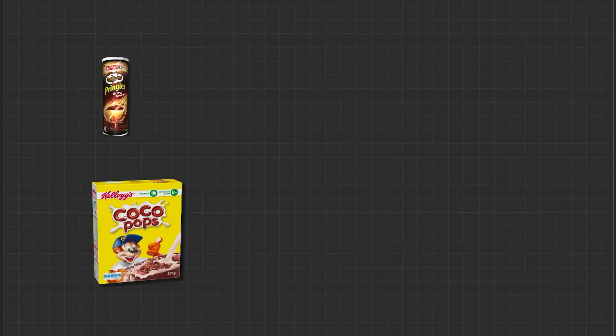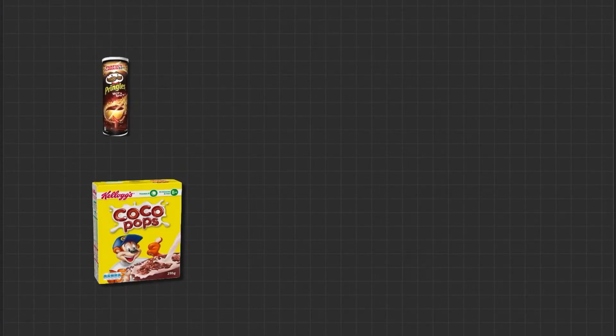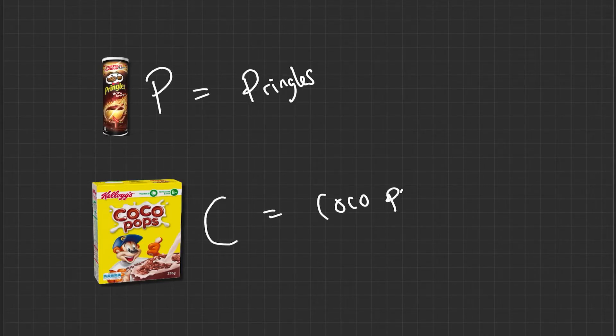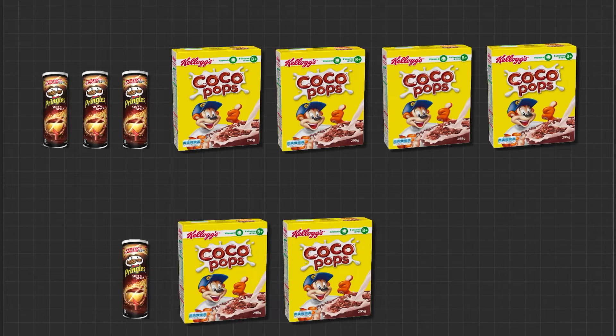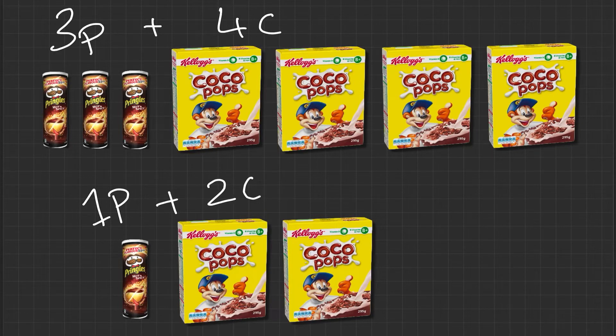Okay, I'm going to get started. So before we do anything, let's define our variables. We're just going to keep this simple and we're going to say P is for Pringles and C is going to be for the Coco Pops. So remember, you bought three packs of Pringles and four Coco Pops box. So we're going to call that 3P plus 4C. And earlier on, I bought one pack of Pringles, so one P and two boxes of Coco Pops. I told you that it cost me six rials and you told me that it cost you 13 rials. So we can use that information to solve this equation graphically.